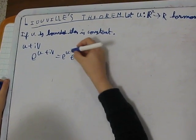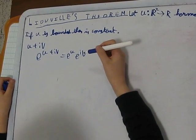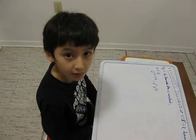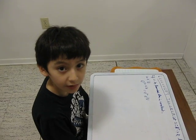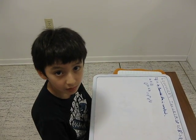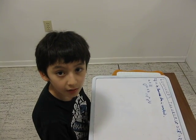V is bounded, so this is bounded. Now, I'm going to apply another theorem that says, if you have an analytic function in all C and is bounded, then it is a constant.